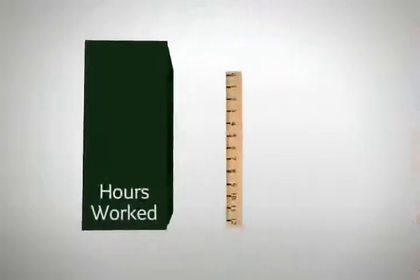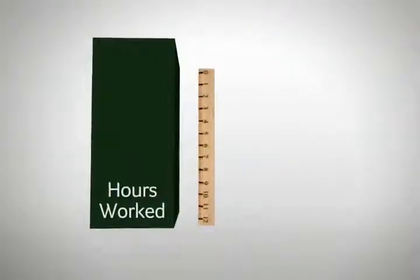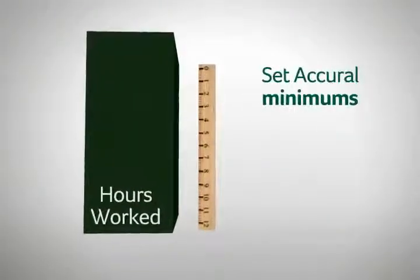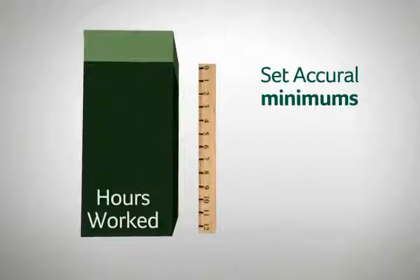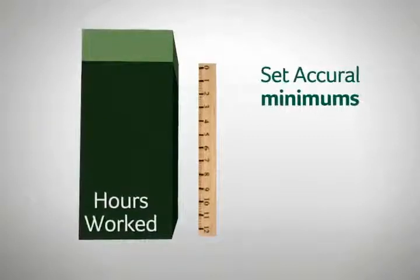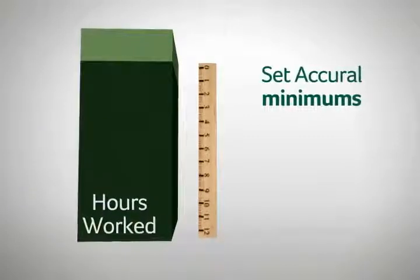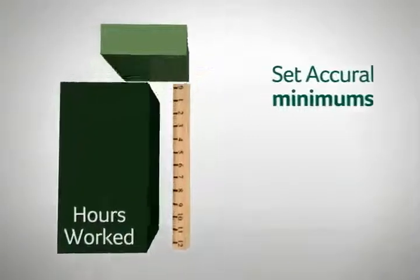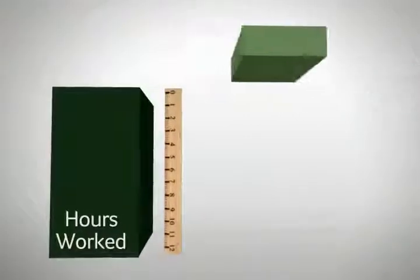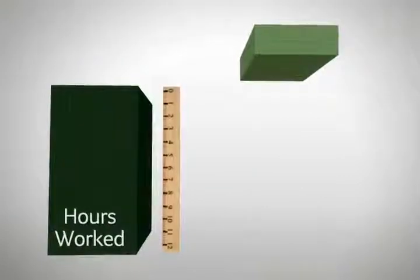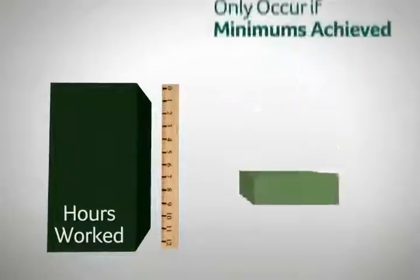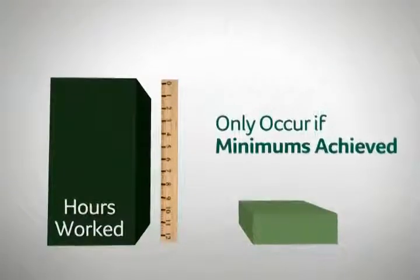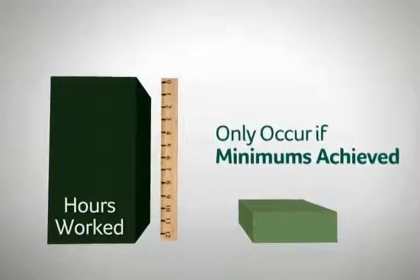Also, manage benefit accruals based on the hours your employees worked. For salaried, union, and part-time employees, 4.5 will compare those numbers with whatever minimums you establish, and accruals will only occur if the conditions you set are achieved.